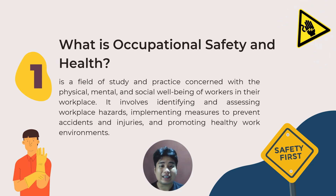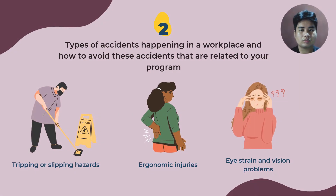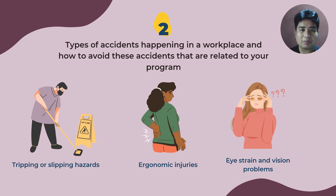Now, we have easily identified and discussed what is occupational safety and health. We may now proceed to discuss the risks that we may encounter as computer engineers. We are on our second agenda: types of accident happening in our workplace and how to avoid them, related to computer engineering. As we all know, accidents can occur in any work environment, and it's important to be aware of potential hazards and take preventive measures to keep ourselves and our colleagues safe.